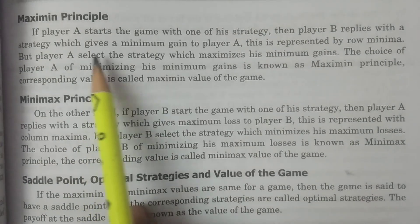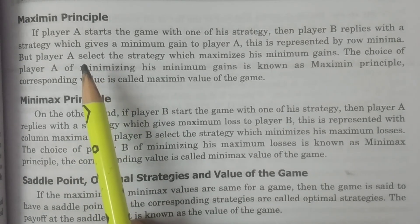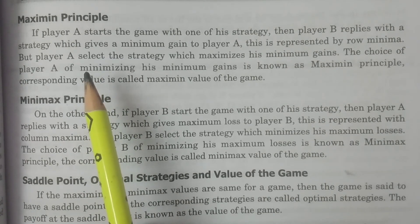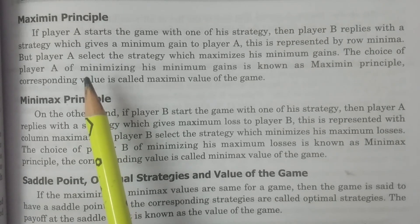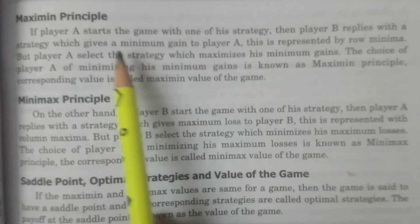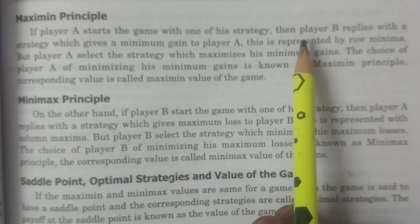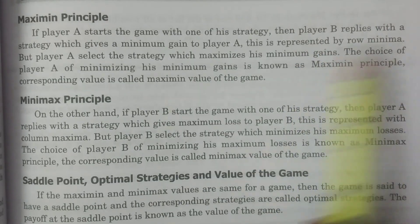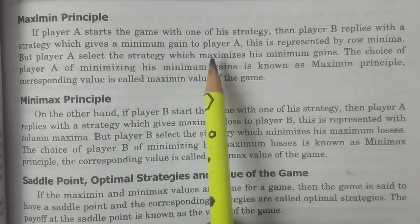What is the Maximin principle? It is meant for player A. If you consider the payoff matrix for player A, this is a principle for player A. If player A starts the game with one of his strategies, then player B replies with a strategy which gives minimum gain to player A.